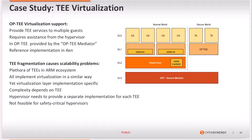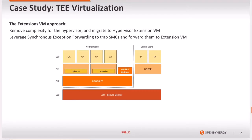This means a hypervisor needs to provide a different implementation for every TEE it needs to support. When it comes to safety-critical hypervisors that need to be certified, this can be a problem. Our approach is to remove the complexity from the hypervisor and outsource it to an extension VM by leveraging the Synchronous Exception Forwarding feature that allows us to trap SMCs happening on the guests and forward them for handling to an extension VM.